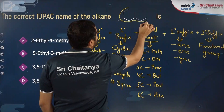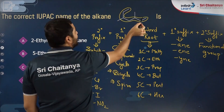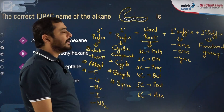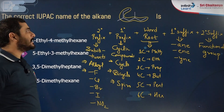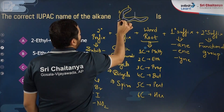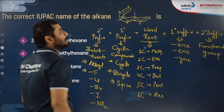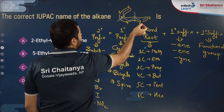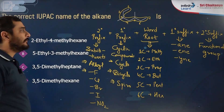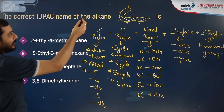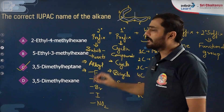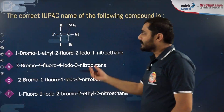Now considering the compound, the parent chain has seven carbon atoms. Numbering is done so that substituents get the least numbers. Numbering from either end gives positions three and five for the two methyl substituents. So the name is 3,5-dimethylheptane — option C is correct.